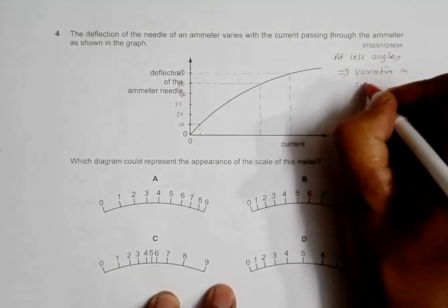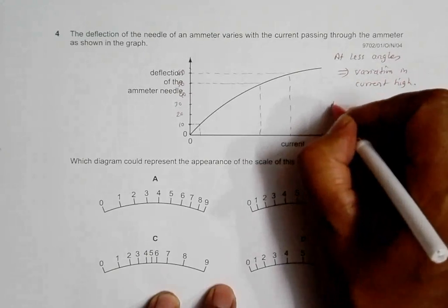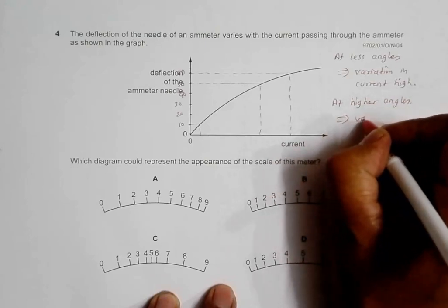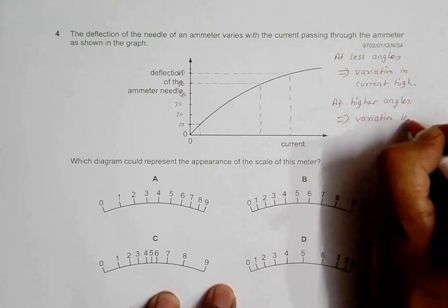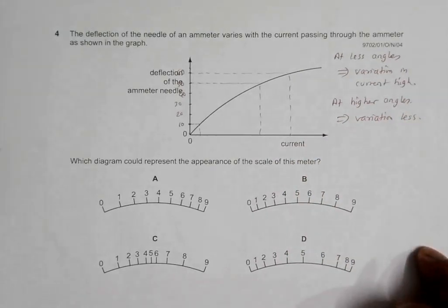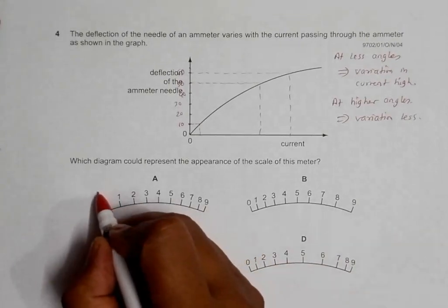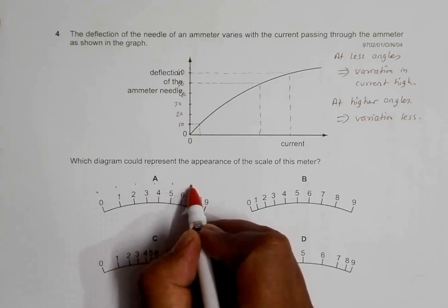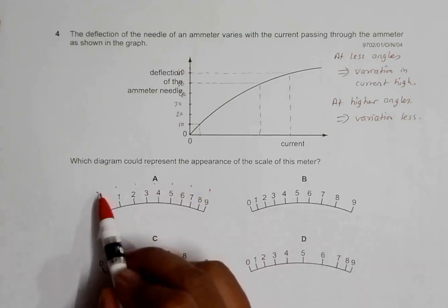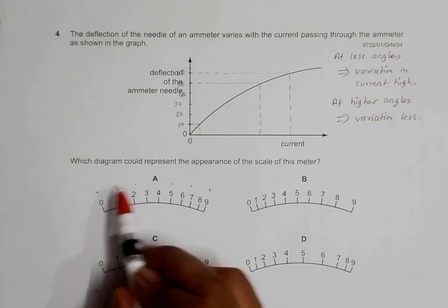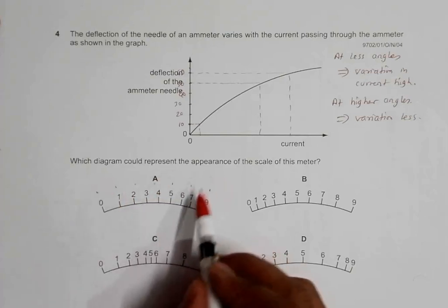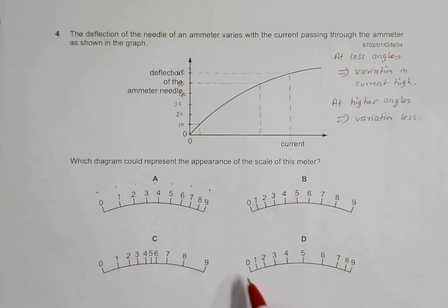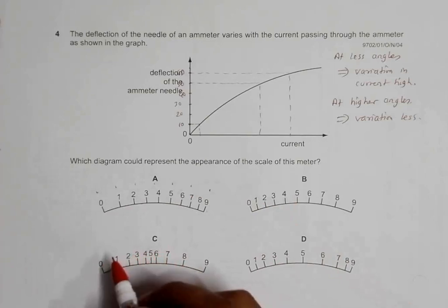So at lesser angles, the variation in current is less, and at higher angles the variation in current is more. Let's go through the choices. In choice A, if we mark 10, 20, 30, 40, 50, 60 degrees at equal spacing, at lesser angles the variation is just one ampere, but at higher angles the variation is more than two amperes — so the variation is high. This seems to be the proper choice.